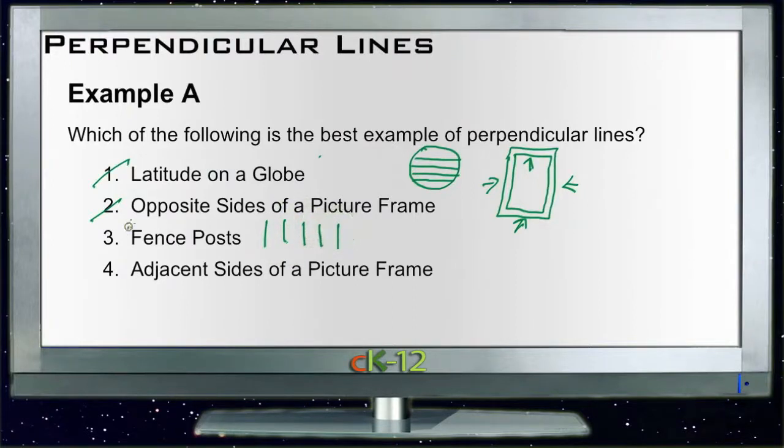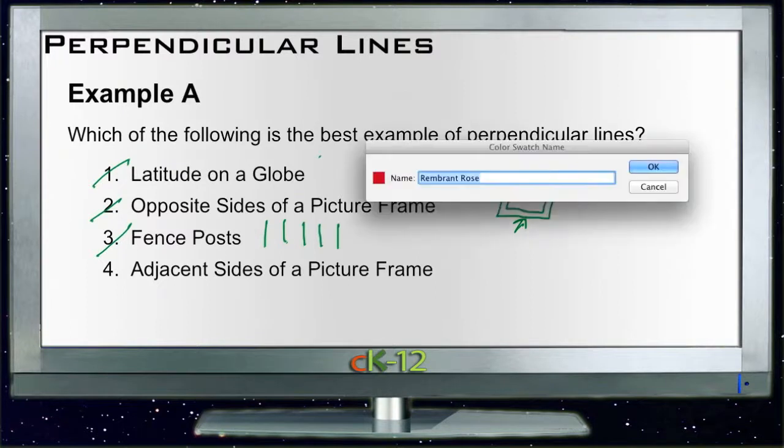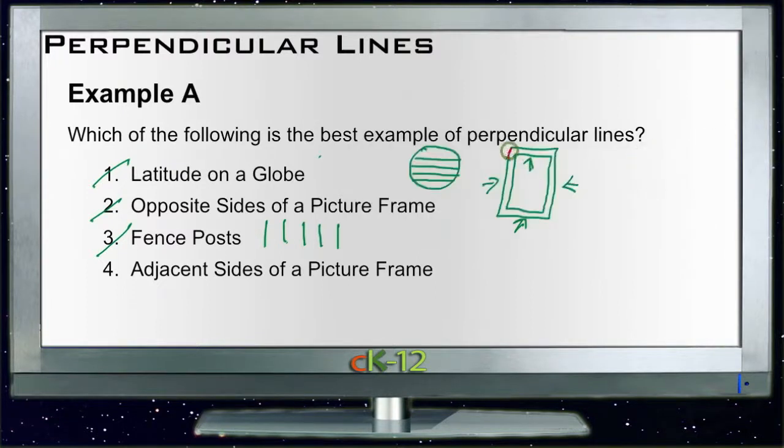Finally, adjacent sides of a picture frame. The adjacent sides of a picture frame are the sides that touch each other, so that would be maybe this side here and this side here. Now those two lines are definitely perpendicular. They're going to meet at a 90-degree angle right here. So definitely the answer is adjacent sides of a picture frame.